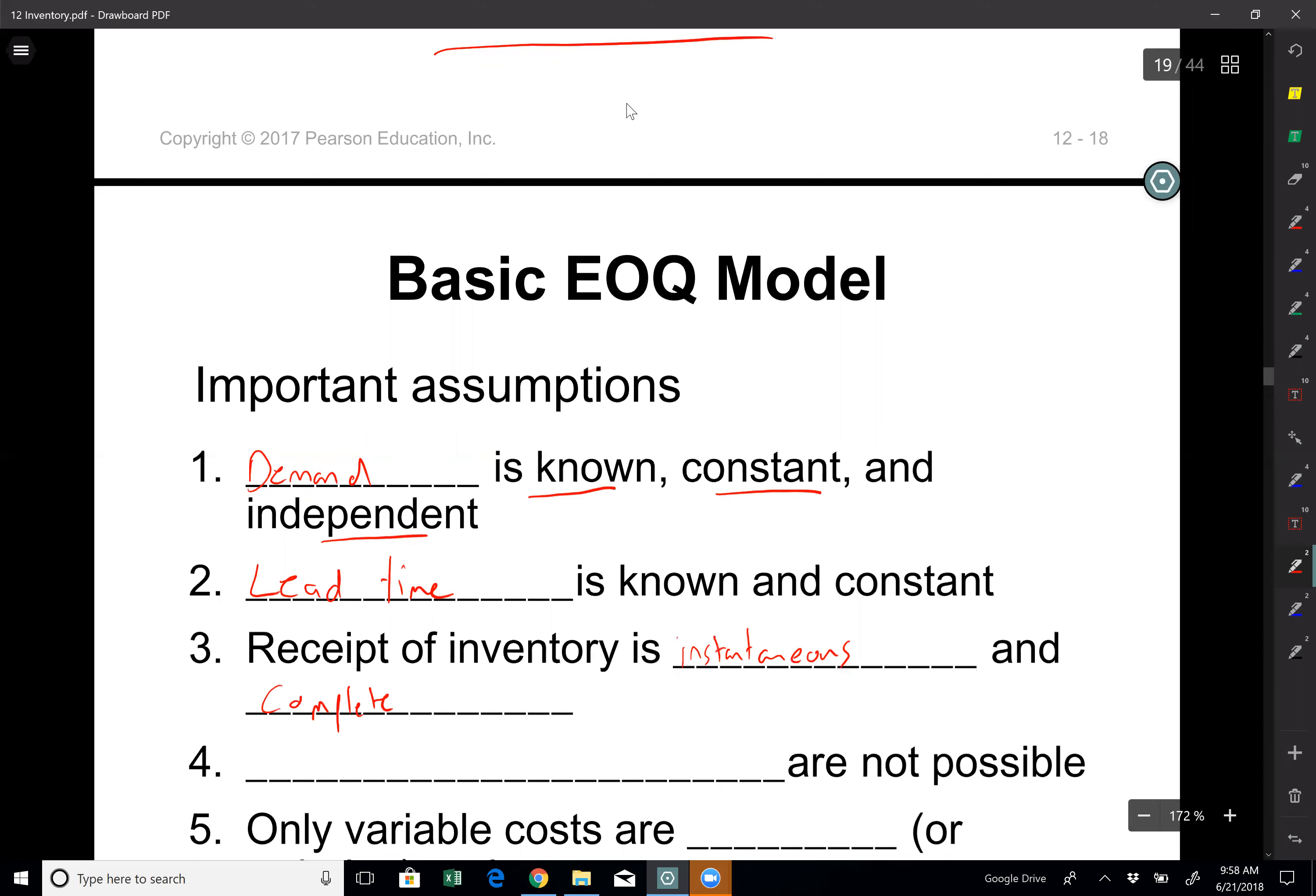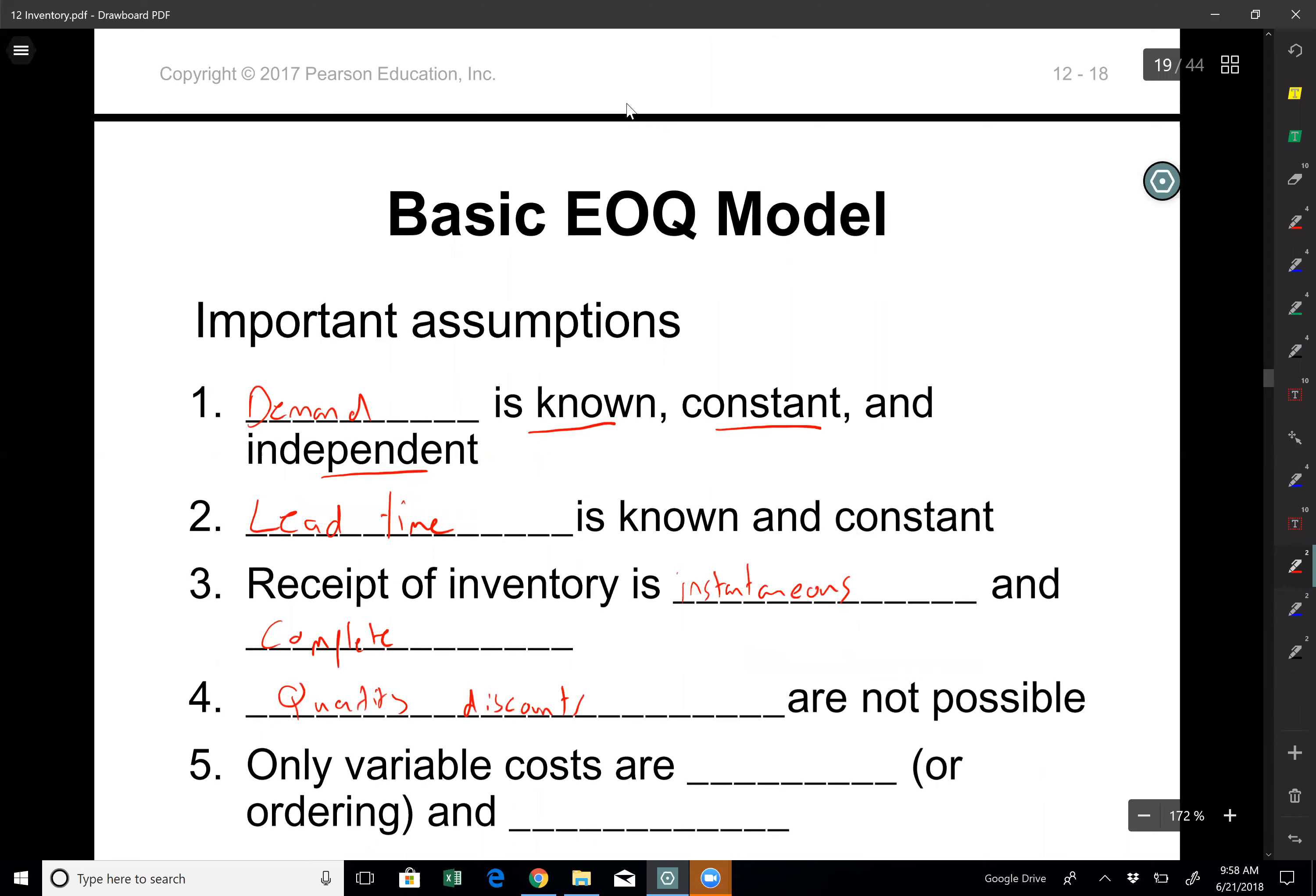Quantity discounts are not possible. So in basic EOQ models we assume that we cannot get a deal if we order more products.